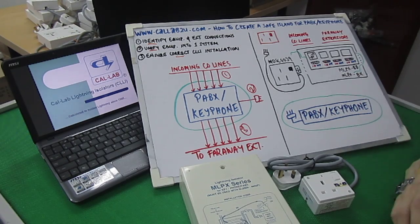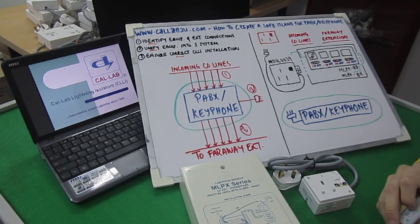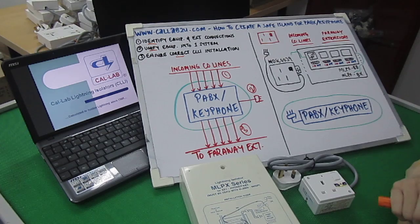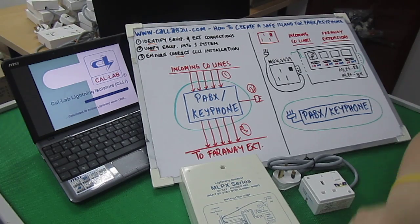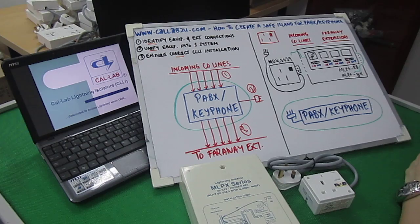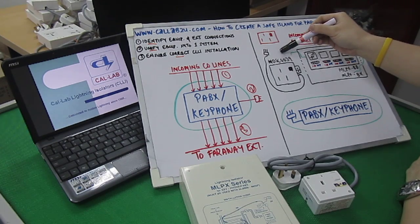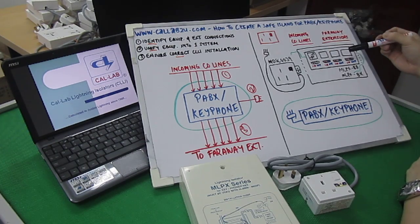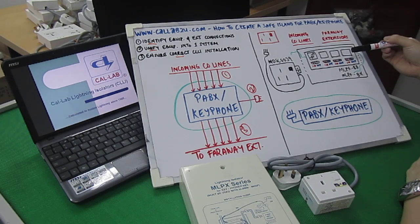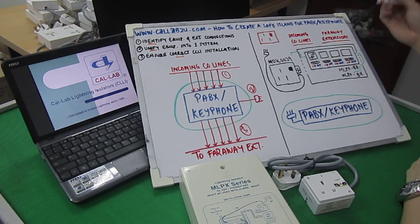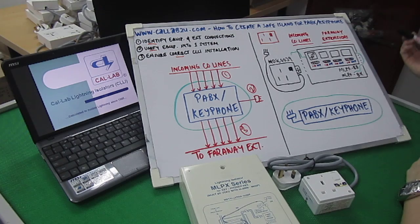Now let's take a look at step number two, which is to unify the equipment into a single system. Now, three things to note in this step. The first thing is that you need to use the correct Lightning Isolator model. In this particular case, we're using the MDSC0039 for the power supply and the MLPX series, which is for the incoming lines as well as the extension lines.